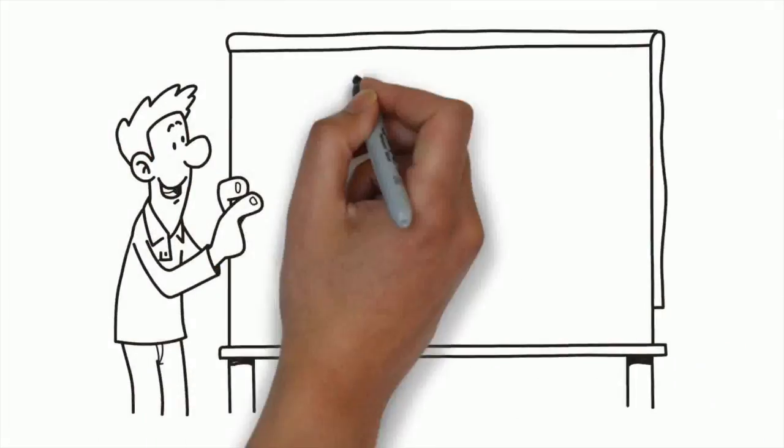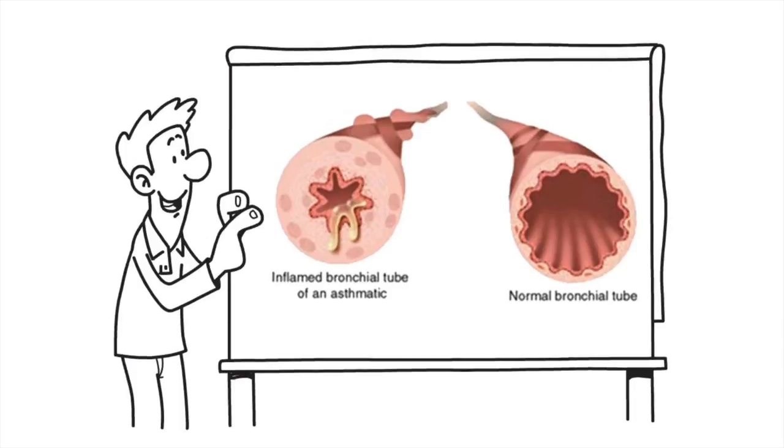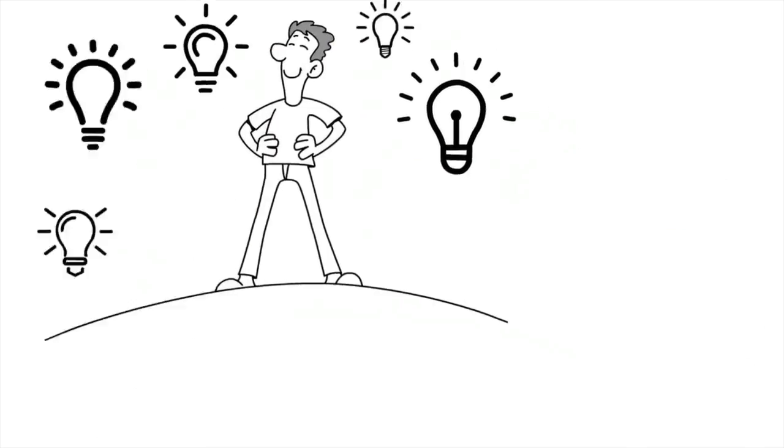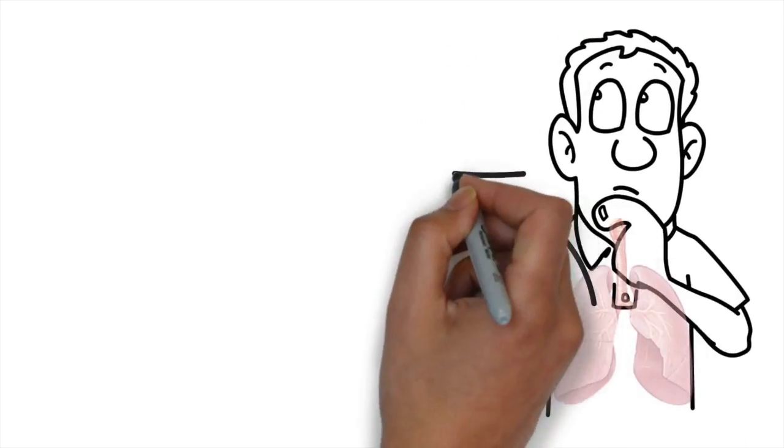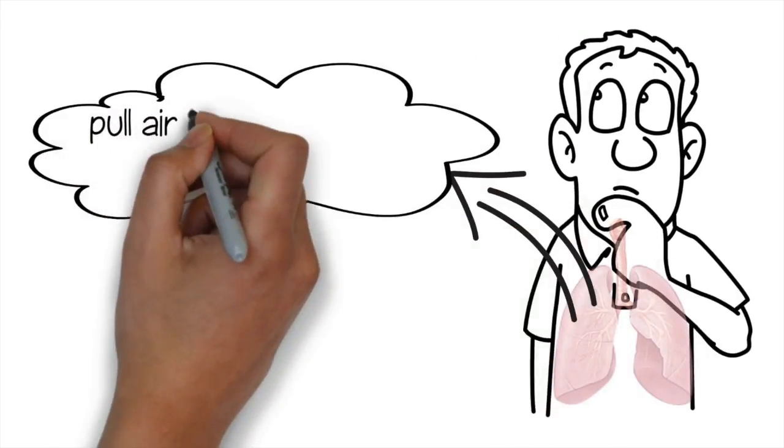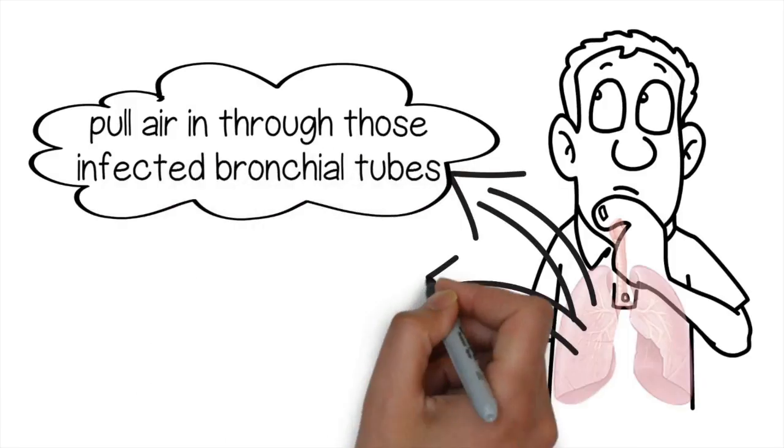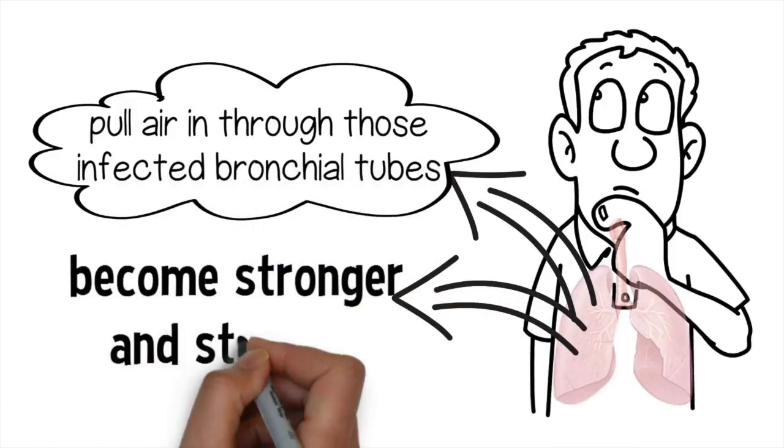The poster also showed me the difference between a healthy bronchial tube and an infected bronchial tube and that's where the light bulb went off. I realized that my lungs had to pull air in through those infected bronchial tubes and that I was unknowingly training my lungs to become stronger and stronger.